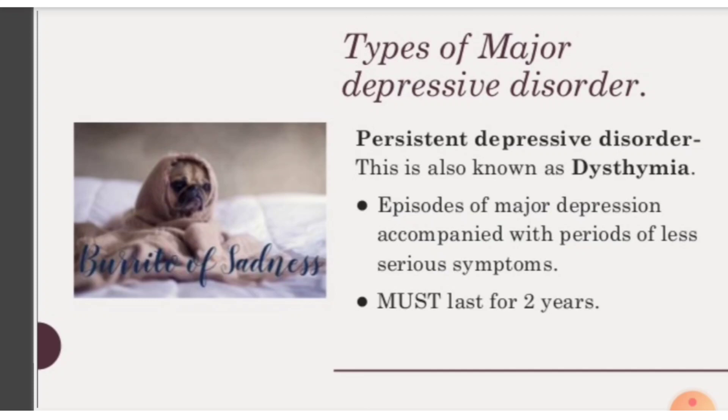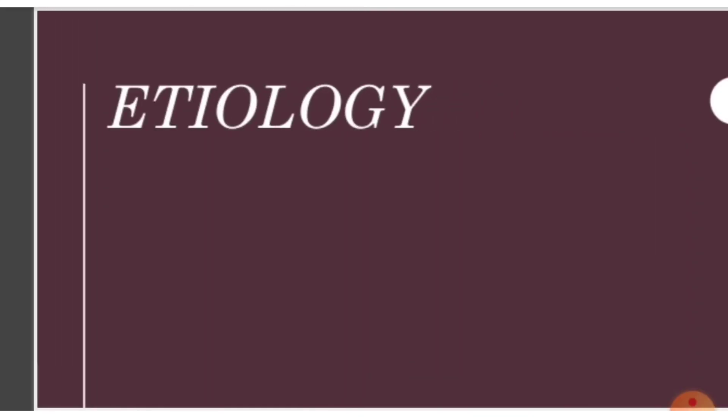For persistent depressive disorder, the person typically has a depressed mood for most of the day, more than half the time, for at least two years — or one year for children and adolescents. Double depression refers to major depressive episodes superimposed on long-standing dysthymia. This condition should last for two years, with major depression accompanied by periods of less serious symptoms.